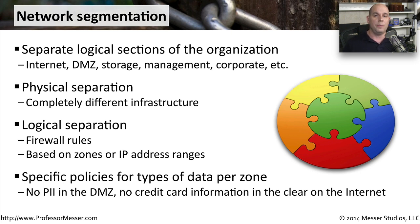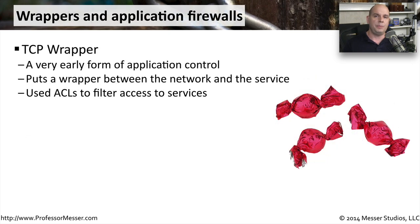For instance, you might require that nobody has any personally identifiable information in the DMZ. And you want to be sure that if any credit card information is transmitted, it never goes across the network unencrypted, and it's always encrypted when it does travel anywhere else in the network. We created TCP wrappers as a very early form of application control. This allowed us to put a wrapper between the network and the service that was running over these network packets to give us more visibility into the application going across our networks. We used access control lists to manage whether certain types of application traffic could go over our network or not.